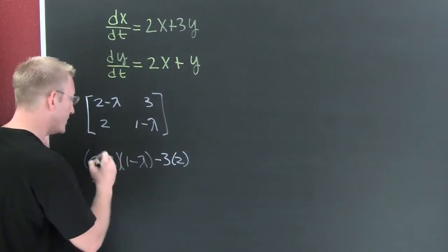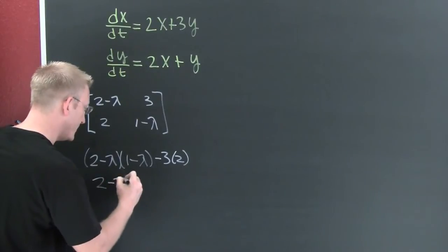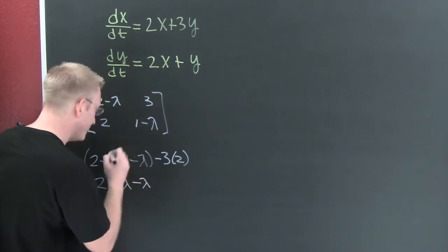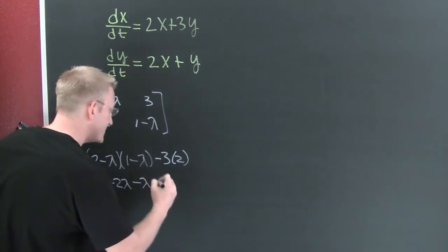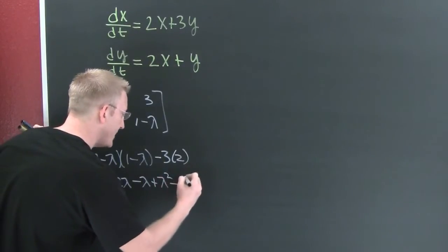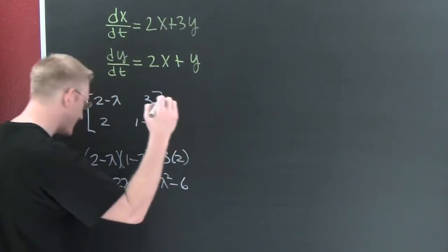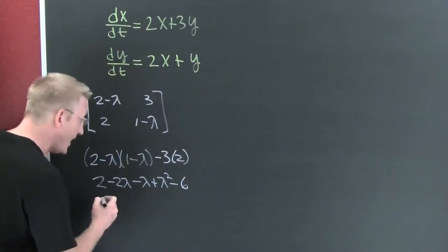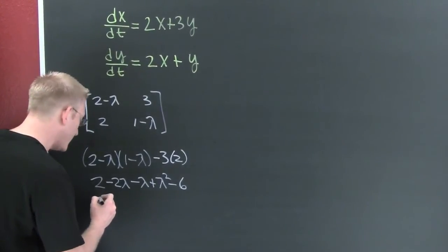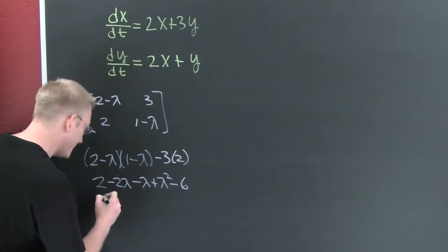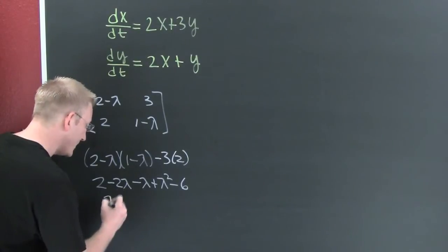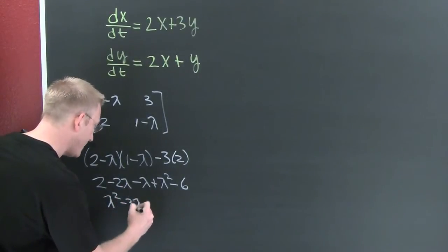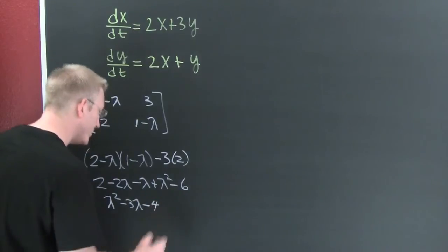This is two minus two lambda minus lambda plus lambda squared minus six. And then I see my characteristic polynomial is going to be lambda squared minus three lambda minus four.